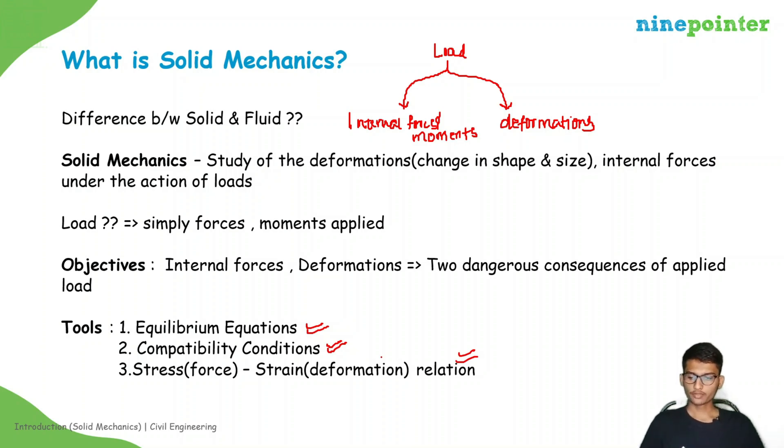Equilibrium equations: if you observe any civil engineering structure it will be in equilibrium, it will be at rest. It won't move. It may deform but it won't move. Means we can apply equilibrium equations. For a two dimensional body what are the equilibrium equations? Sigma Fx equals zero, sigma Fy equals zero, and sigma M equals zero.